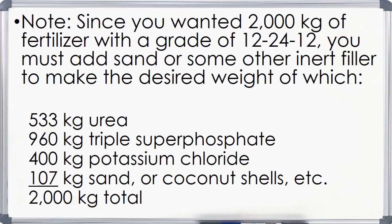Since you want 2,000 kg of fertilizer with a grade of 12-24-12, you must add sand or some other inert filler to make the desired weight. You will need 533 kg of urea, 960 kg of triple super phosphate, 400 kg of potassium chloride, and 107 kg of sand, coconut shells, or any filler, so that the total will become 2,000 kg.